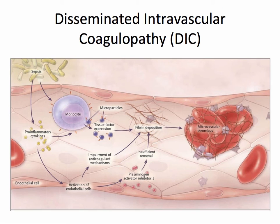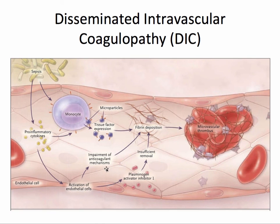Disseminated intravascular coagulopathy, or DIC, is essentially a battle between coagulation and anticoagulation. This can be triggered by septic shock, endotoxins, viruses, tissue necrosis or injury, or cancer treatment. In this image, I show how sepsis recruits monocytes, resulting in fibrin deposition as well as the release of pro-inflammatory cytokines, which activates endothelial cells, resulting in impairment of anticoagulant mechanisms and insufficient removal of fibrin depositions. This results in the development of microvascular thrombi, which can decrease tissue perfusion.